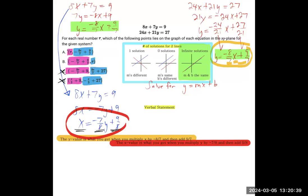So answer choice A says, the y value right here is what you get when you take the x value, which is r, and you multiply by negative 8 over 7, and then add 9 over 7. So the y value is what you get when you multiply the x value, r, by negative 8 over 7, and then add 9 over 7. That sounds pretty good.